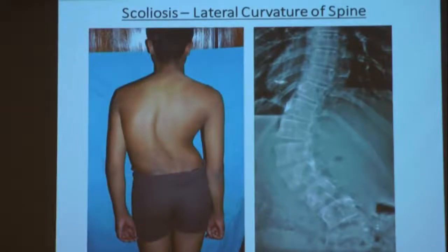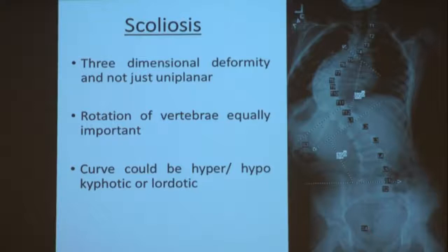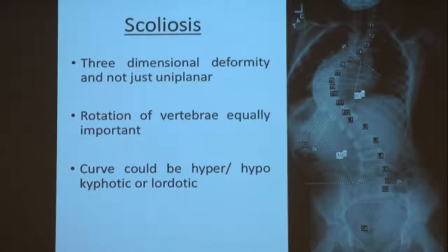What is scoliosis? Is it just lateral curvature? No. The other components of deformity in scoliosis include rotation and change in sagittal curvature. The normal sagittal curvatures are thoracic kyphosis, lumbar lordosis, and cervical lordosis. To fully describe a spinal deformity, you need to comment on all three: coronal change is scoliosis, sagittal change includes kyphosis, lordosis, hyperlordosis, hyperkyphosis, and the degree of rotation.